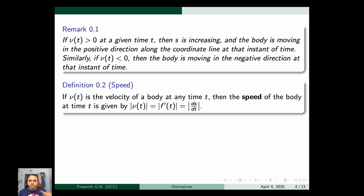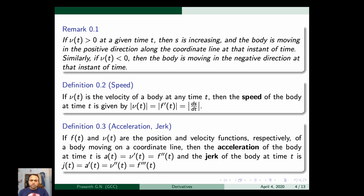The speed of the body at time t is |v(t)| = |f'(t)| = |ds/dt|. We also define acceleration and jerk — things you may have studied in physics. If f(t) and v(t) are position and velocity functions respectively, then the acceleration is a(t) = v'(t) = f''(t). The jerk of the body at time t is j(t) = a'(t) = v''(t) = f'''(t). So differentiating the position function twice gives acceleration, and three times gives jerk.